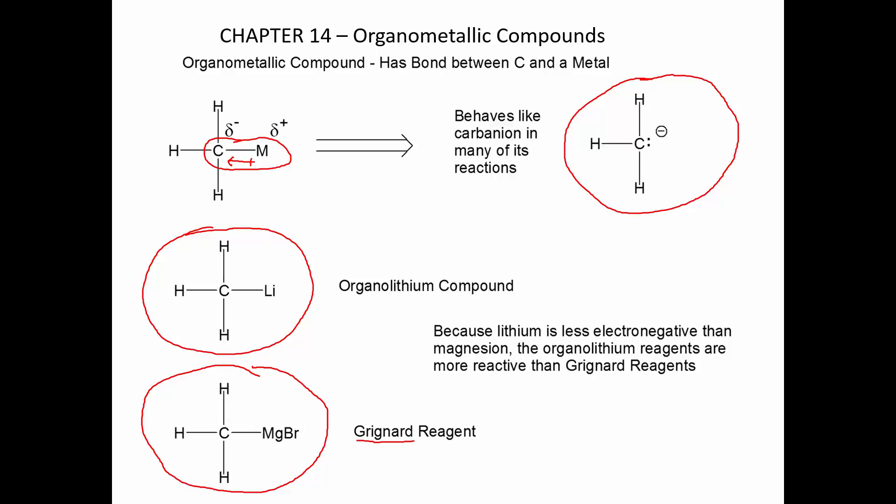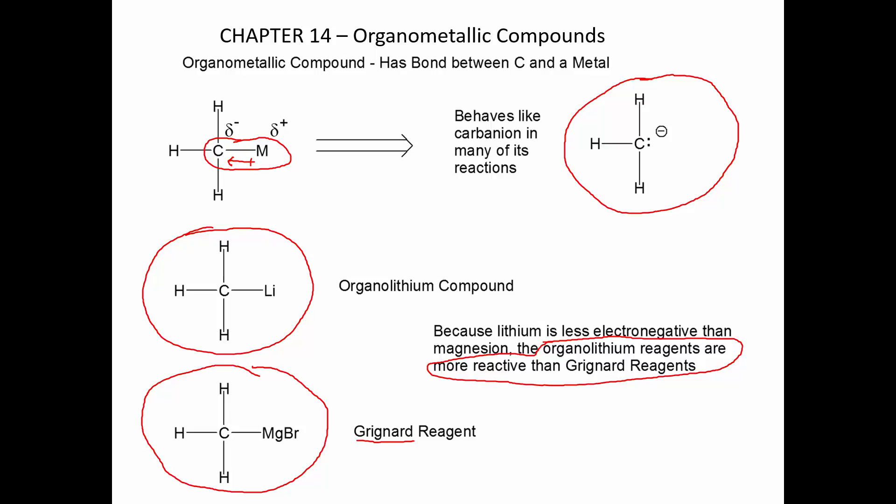If we look at the periodic table, lithium is less electronegative than magnesium. Therefore, the organolithium reagents are going to be more reactive than Grignard reagents in most of the reactions where we use them. However, for most of the reactions we actually discuss, these two are pretty much interchangeable.